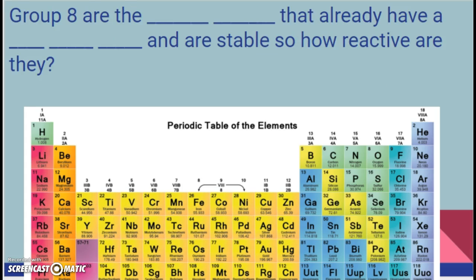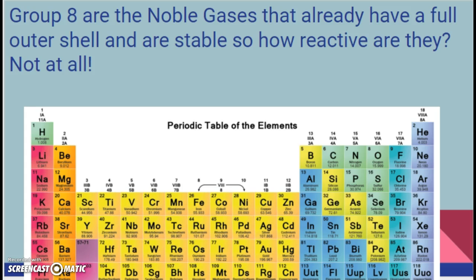Group 8 are the noble gases, which already have a full outer shell and are stable. So how reactive are they? Not at all. They are the noble gases who look down on the peasant atoms — they don't need to react with anyone.